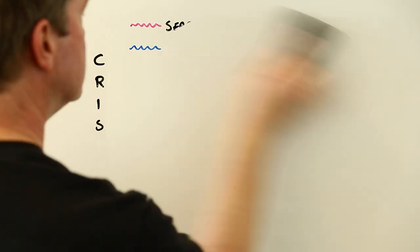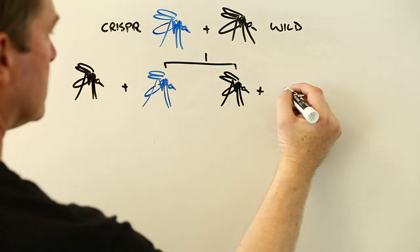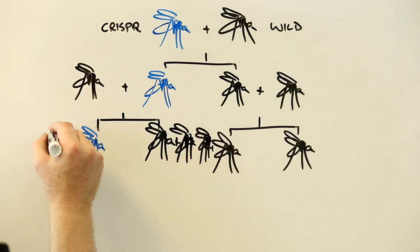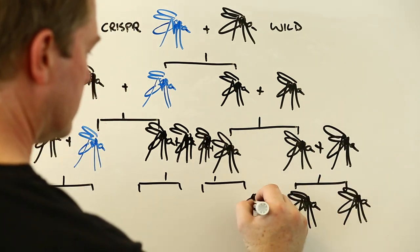Unfortunately, on its own, CRISPR isn't so effective. Every time a CRISPR mosquito mates with a wild one, its genetically modified DNA is diluted down, meaning that some of its offspring will still be able to carry the malaria parasite.